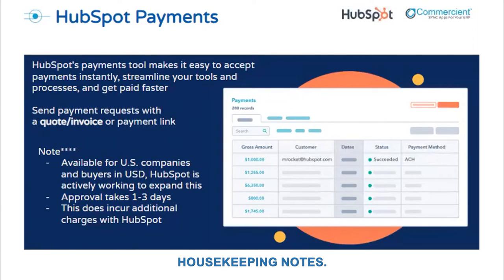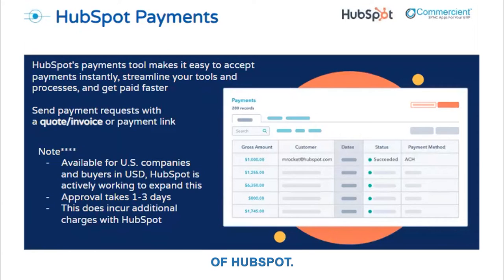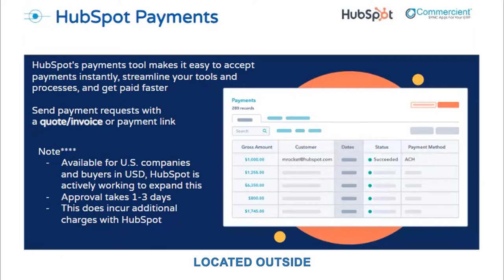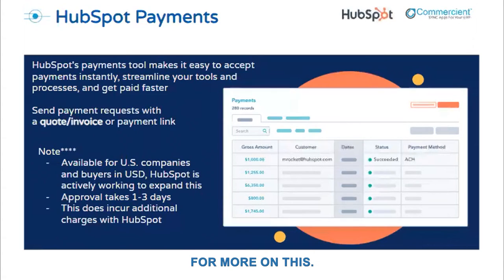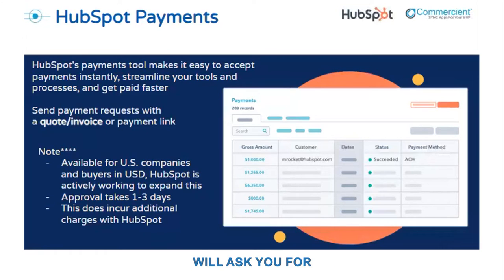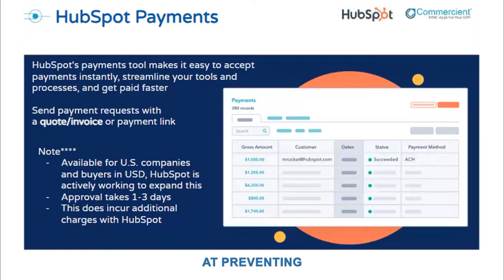Some important housekeeping notes: your business or organization must be located in the United States, must have a U.S. bank account, and must be using a paid version of HubSpot. As of now, payments are only allowed in U.S. dollars, although credit card payments are allowed from customers located outside of the U.S. as long as they're in USD. Setting up HubSpot payments requires a short approval process from HubSpot and can only be completed by a super admin user. The approval will ask for sensitive information, because payment processing is subject to financial laws and regulations aimed at preventing money laundering, funding of terrorism, and other illegal activities.